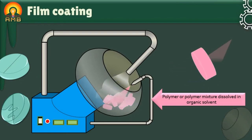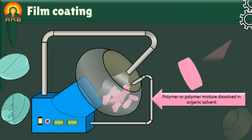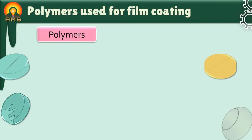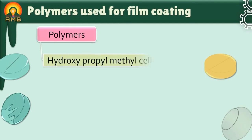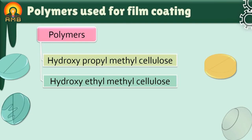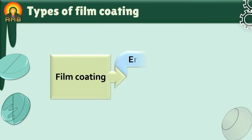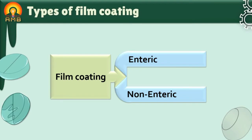Film coating is also used to make the tablets waterproof before sugar coating. The polymers used for film coating are hydroxypropylmethylcellulose, hydroxyethylmethylcellulose, carbowax, polyethylene glycol, etc. Film coating can be of enteric or non-enteric types.